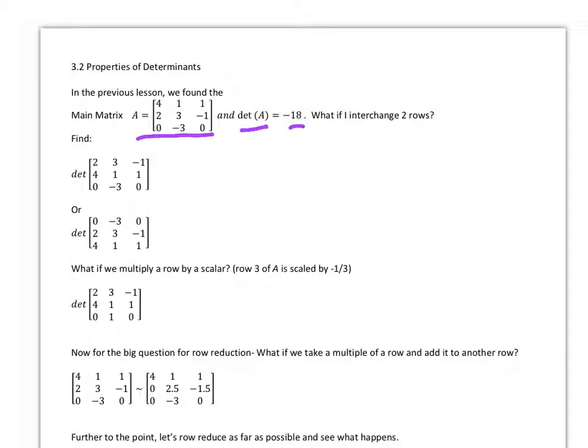Now our ultimate goal is to try to make some of these things easier. If we can do row reduction, then we can figure out the determinant a little bit easier, and so we're going to see what happens when we do row reduction. So first of all, what if we interchange two rows? Go ahead and find the determinant of each one of these because this one all I did was I switched these two rows and this one I just switched these two rows.